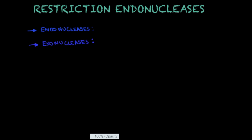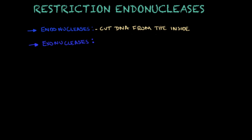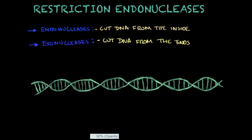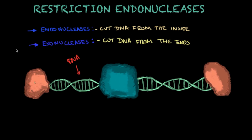I need to make a distinction between endonucleases versus exonucleases, because you will also see in biology a lot of enzymes with the name exonucleases. One thing in common between these two enzymes is that they cut DNA, but endonucleases — as the name indicates, 'endo' — cut DNA from the inside of the molecule. Exonucleases — as the name indicates, 'exo' — cut DNA from the ends. I have here a simple illustration showing a DNA molecule and where these enzymes act: at the extremities you find exonucleases cutting DNA, and somewhere inside the molecule you find endonucleases.